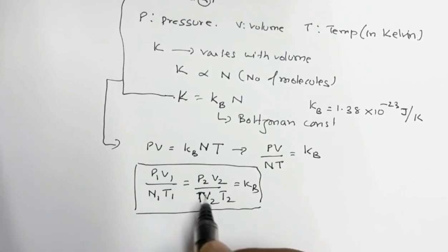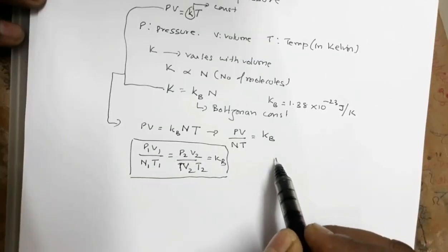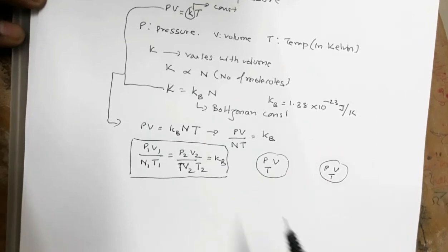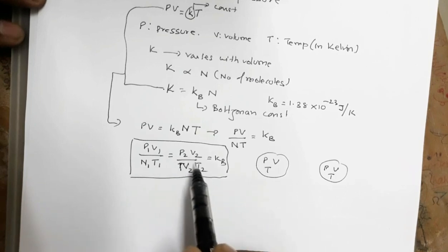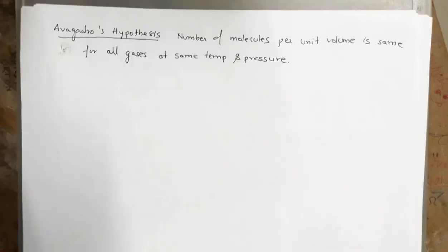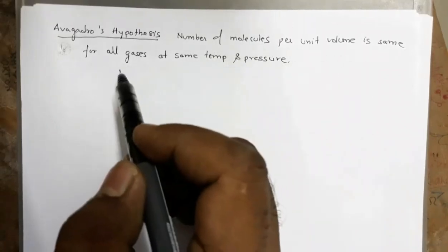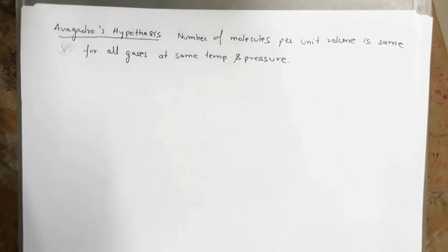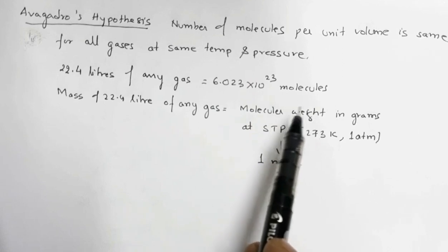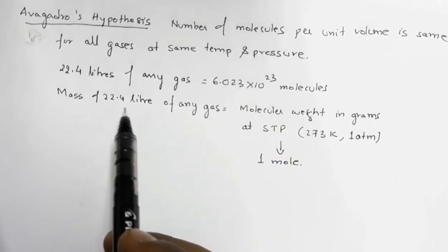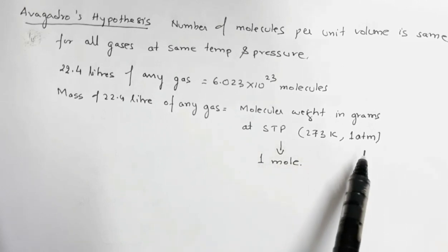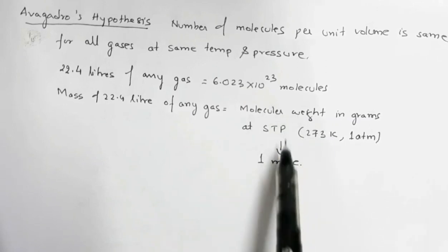These relations hold for state 1 and state 2. From this we can conclude that if two gases have the same pressure, volume, and temperature, then the number of molecules will also be equal — this is Avogadro's hypothesis. Also, 22.4 liters of any gas contains 6.023 × 10²³ molecules (Avogadro's number), and the mass of 22.4 liters of any gas equals its molecular weight in grams at STP (273 K, 1 atmosphere), which is equivalent to 1 mole.